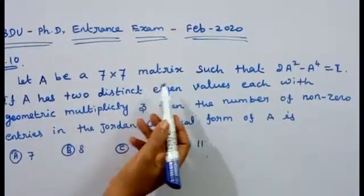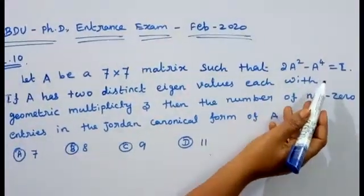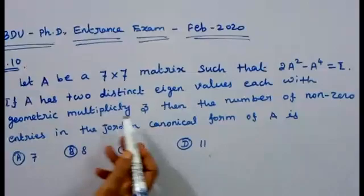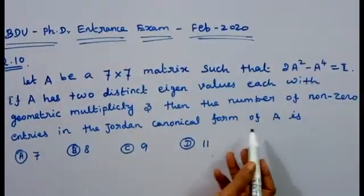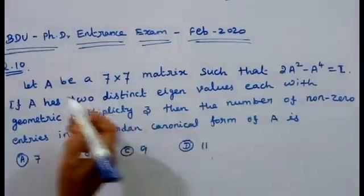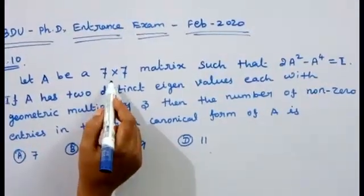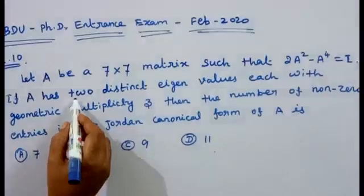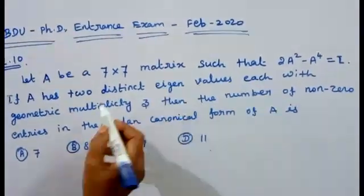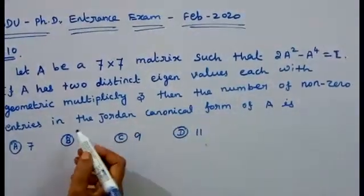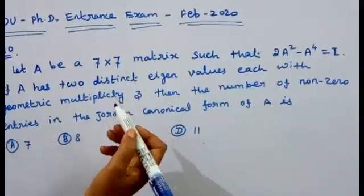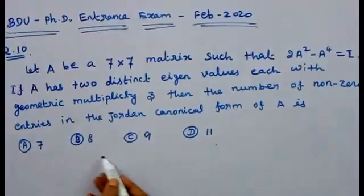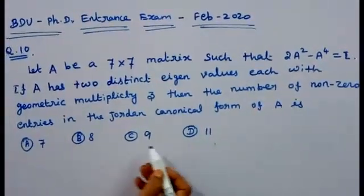A and B: a 7×7 matrix such that 2A² minus A⁴ is equal to I. If A has two distinct eigenvalues, each with geometric multiplicity 3, then the number of non-zero entries in the Jordan canonical form of A is. The options are: first option is 7, second one is 8, third one is 9, and last one is 11.